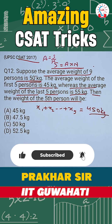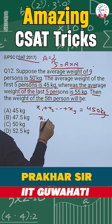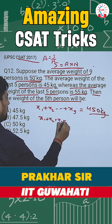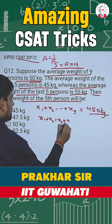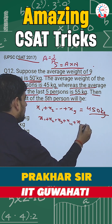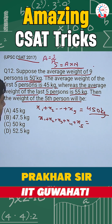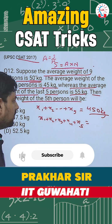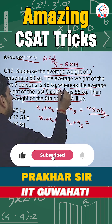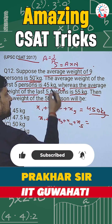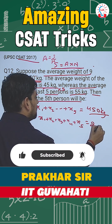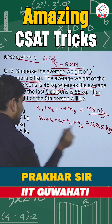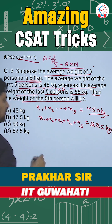According to the question, x1 plus x2 plus x3 plus x4 plus x5 — the average weight of the first 5 persons is 45 kg. That means 45 into 5 comes out to be 225 kg. So x1 to x5 is 225 kg.